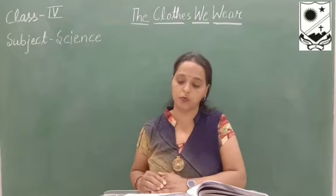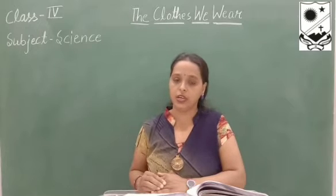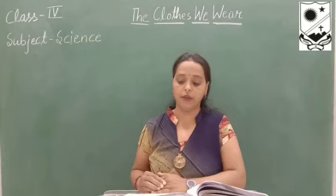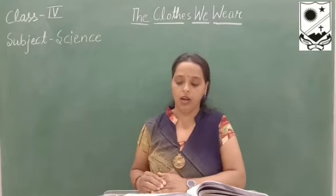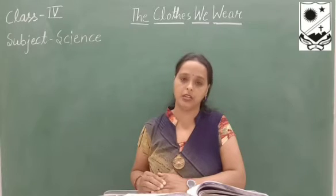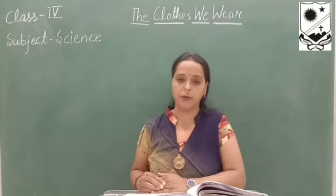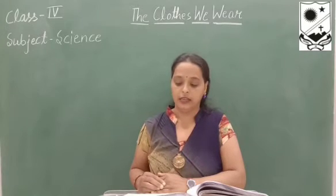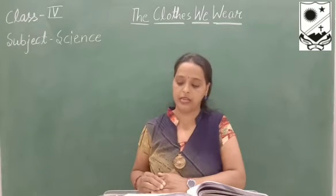The next topic is cloth materials. Different materials for making clothes are obtained from natural or synthetic sources. Natural fibers like cotton, linen, jute, silk, and wool are obtained from natural sources like plants and animals. Cotton is obtained from the cotton plant. Linen is obtained from flax plants. Silk is obtained from the cocoons of silkworms. We get wool from the hair of animals like sheep, camels, and goats.